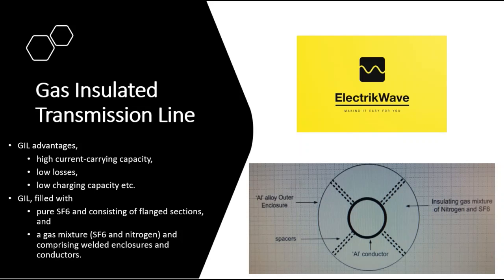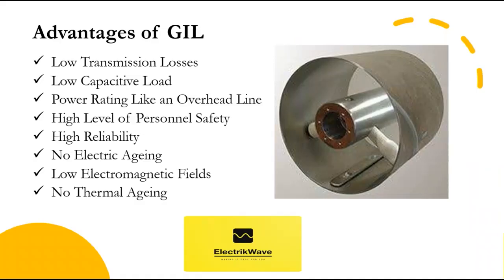GIL solutions offer different advantages such as high current carrying capacity, low losses, and low charging capacity. The first generation of GIL was filled with pure SF6 and consisting of flanged sections, and the second generation of GIL was filled with a gas mixture of SF6 and nitrogen, comprising welded enclosures and conductors. GIL offers several advantages: low transmission losses, low capacitive load, power rating like an overhead line, high level of personnel safety, high reliability, no electric aging, low electromagnetic fields, and no thermal aging. Now let's understand each advantage one by one.